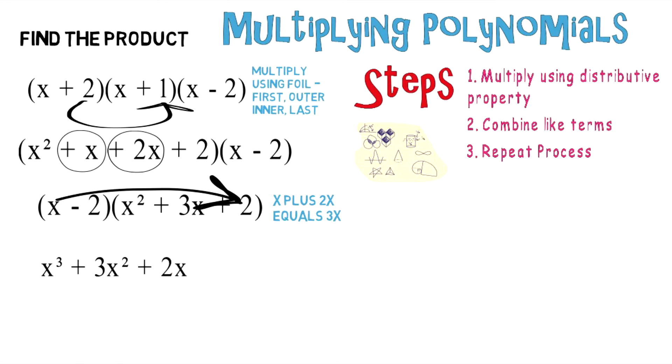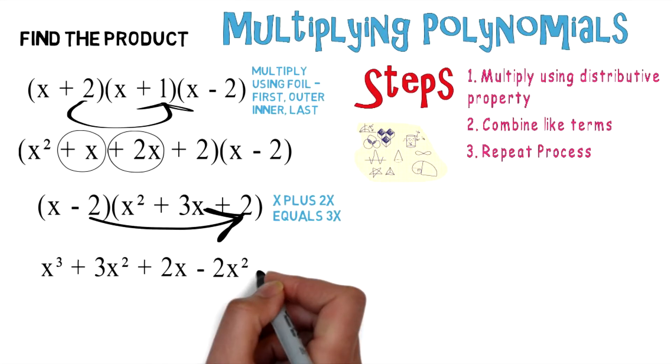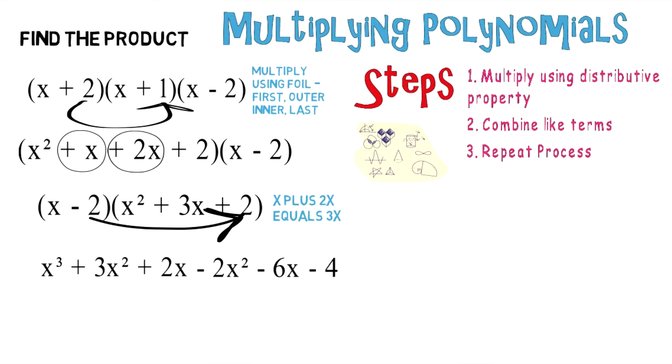Now take the -2 and multiply it by x², then -2 times 3x, and -2 times 2, which leaves you with -2x² - 6x - 4.